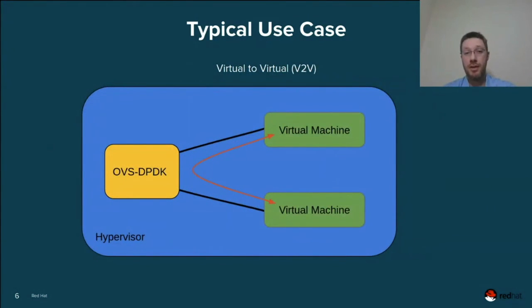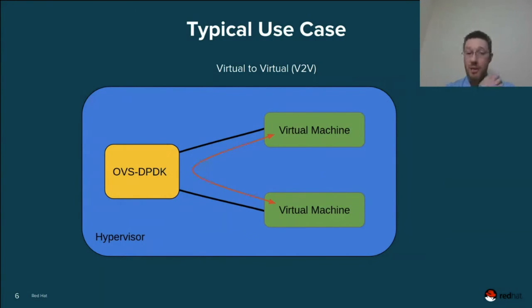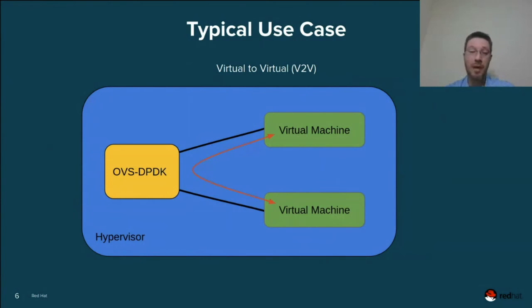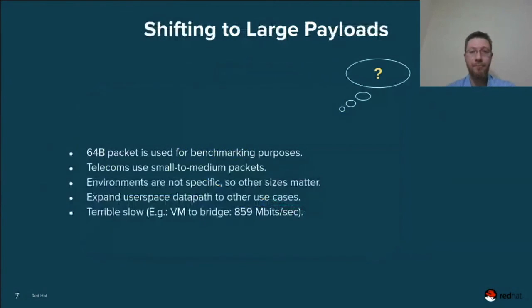The second typical use case is called Virtual to Virtual, or V2V. It's basically one hypervisor running two or more virtual machines and OVS-DPDK completely in user space, providing network connectivity to those virtual machines. One virtual machine sends packets, they go to OVS-DPDK, and then to the other virtual machine.